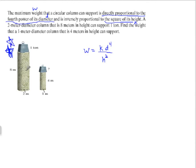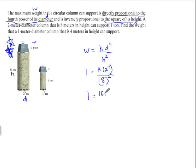Based on this larger column, they give us enough information. The maximum weight is 1 ton. So: 1 is equal to k times 2 to the 4th power over 8 squared. 2 to the 4th is 16, and 8 squared is 64. Multiply both sides by 64: 64 = 16k. Divide both sides by 16, and we get k = 4. That is our constant of variation.